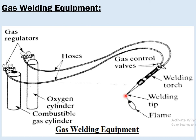By triggering a spark, we can flame the oxy-acetylene gas here. Usually, the oxygen cylinder will be marked in green colour and the acetylene gas cylinder will be marked in maroon colour. The regulator of the oxygen gas cylinder will be marked in green colour, and the regulator of the acetylene gas will be marked in red colour.